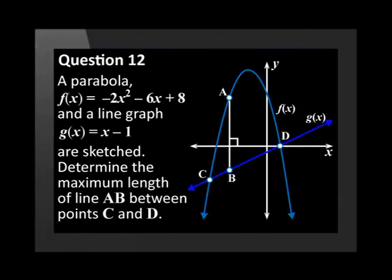A parabola f of x equals minus 2x squared minus 6x plus 8 and a line graph g of x equal to x minus 1 are sketched. The graphs intersect at point c and d. Line a, b is parallel to the y-axis with point a on the parabola and point b on the straight line. Determine the maximum length of line a, b between point c and d.